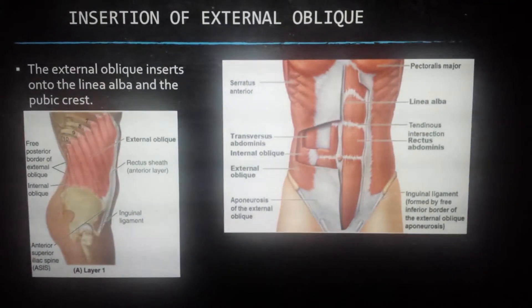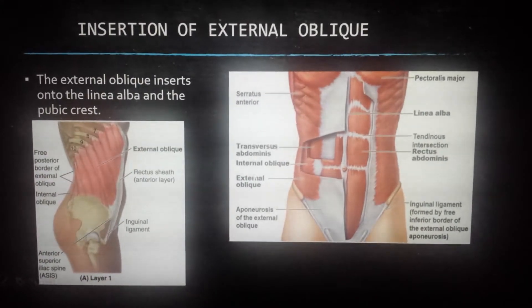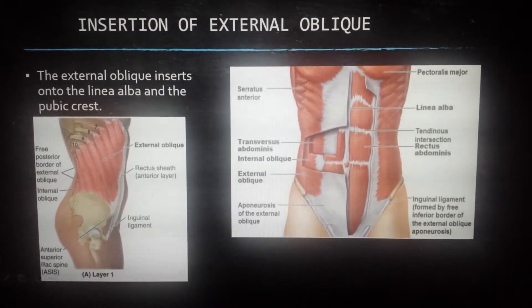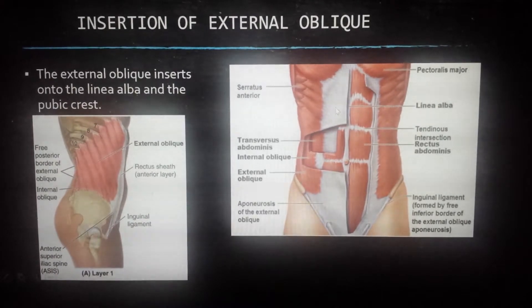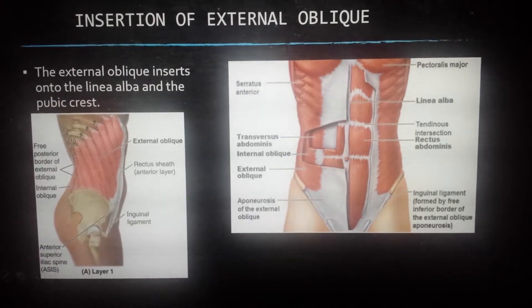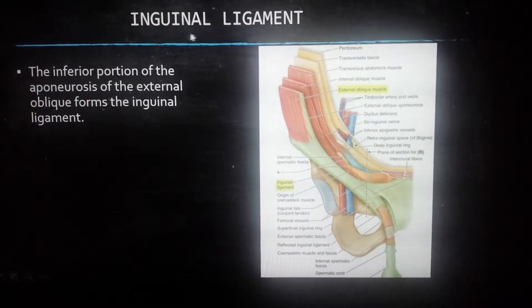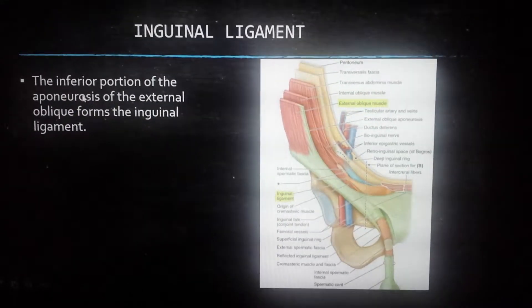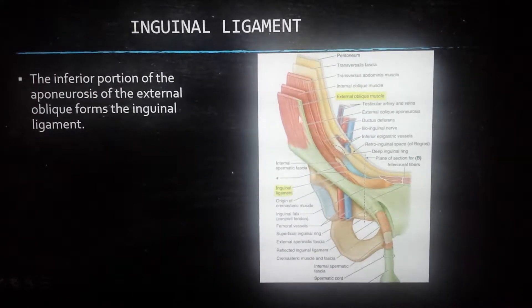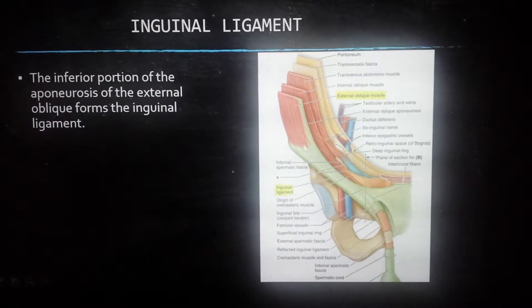One important thing to note with the external oblique is that it inserts into the linea alba and the pubic crest, as you can see in the picture on the left. On the right, as it connects with that aponeurosis, it does indeed insert onto the linea alba and the inguinal ligament. The inferior portion of the aponeurosis of the external oblique forms the inguinal ligament, as you can see it comes right in and connects into that inguinal ligament.